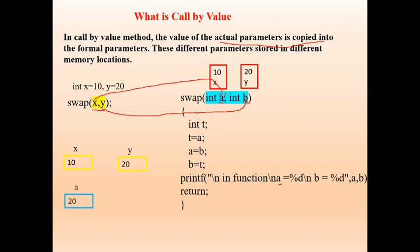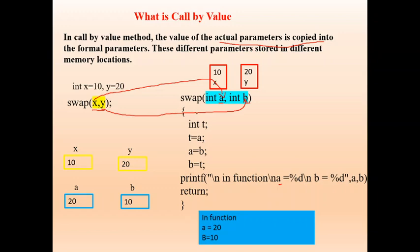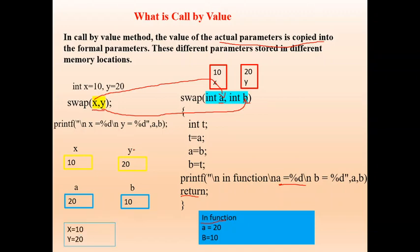Inside the function, a value is 20 and b value is 10 — this is the swapping. But when control comes back to the main program after the return statement, all these local variables get destroyed. Whenever control comes back to the calling location, the variables keep their original value. That is, x value is 10 and y value is 20.